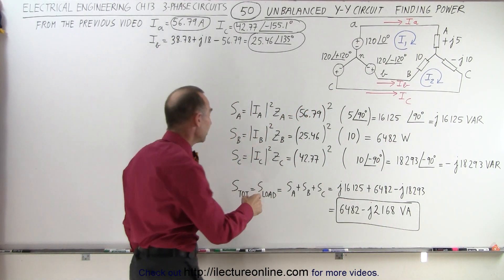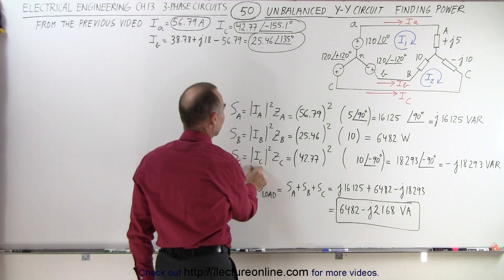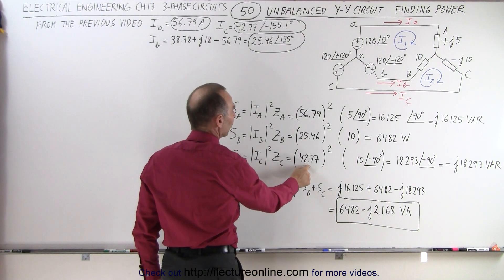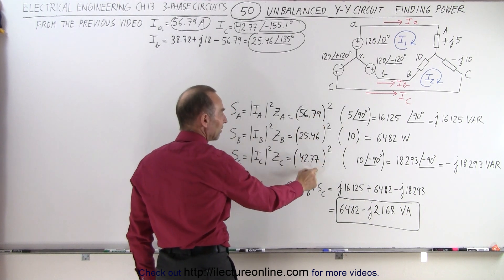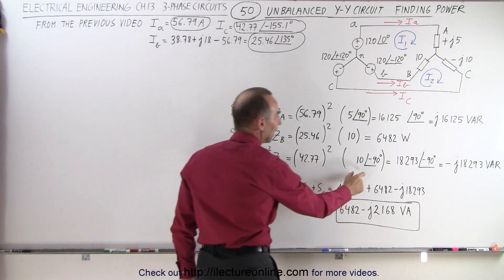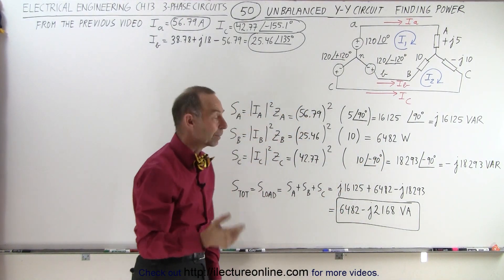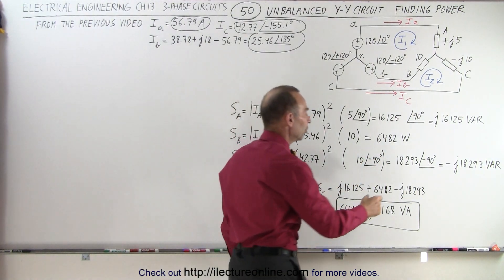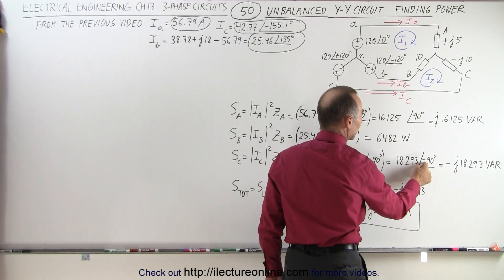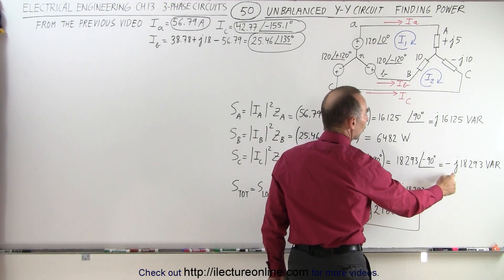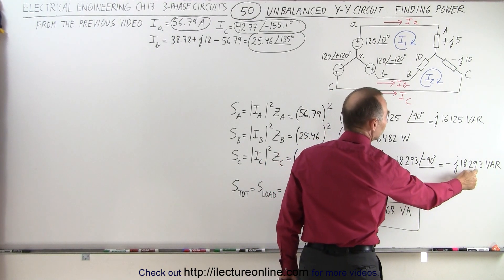Finally, for the third impedance, we take current I_C squared times the impedance: 42.77 squared. Again, no phase angle, just the magnitude. Here we have a phase angle of -90°, which indicates it's purely capacitive. So we have a magnitude of 18,293 with a -90° phase angle, or -j18,293.